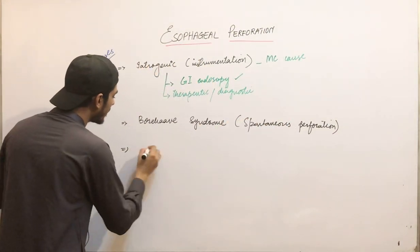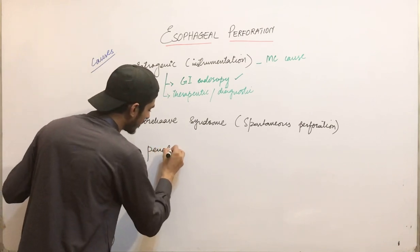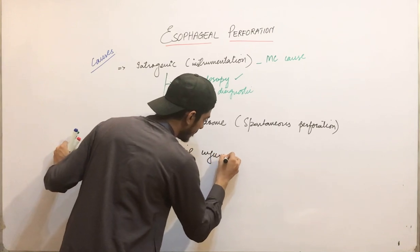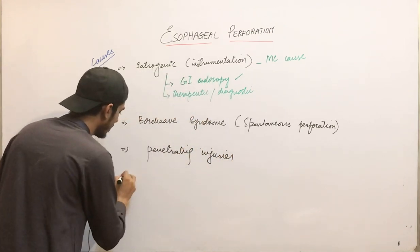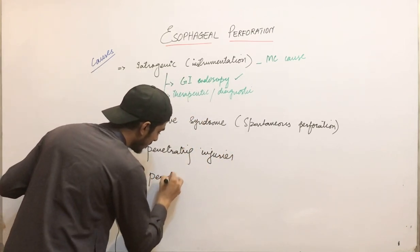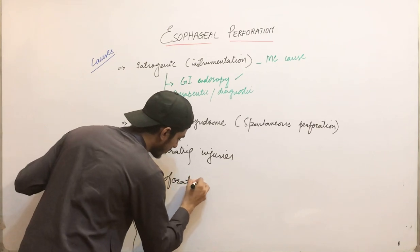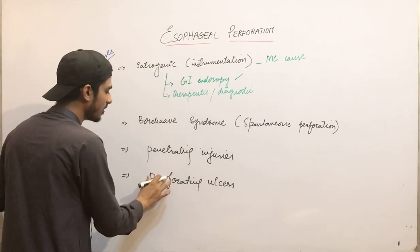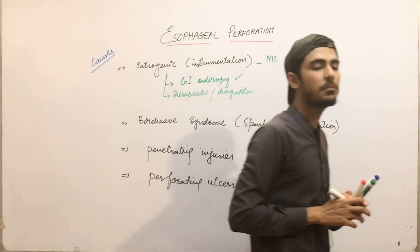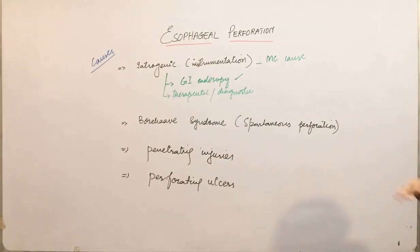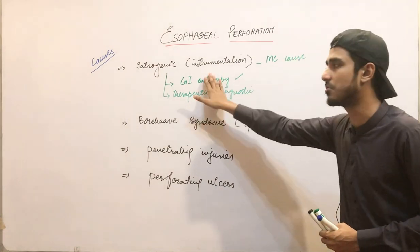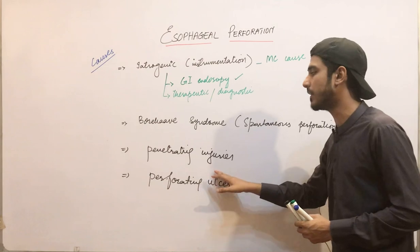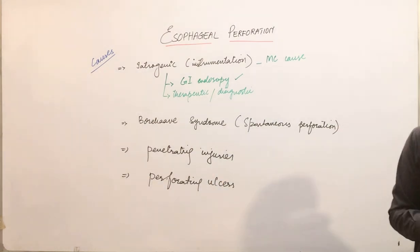We also have certain penetrating injuries that result in perforation of the esophagus, and certain perforating ulcers that can also result in esophageal perforation. These are the main causes. Remember, the most common cause is iatrogenic instrumentation. Other causes include Boerhaave syndrome, penetrating injury, or perforating ulcers.